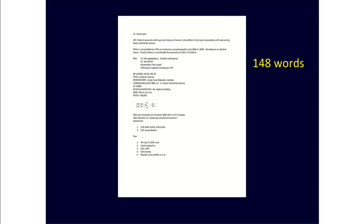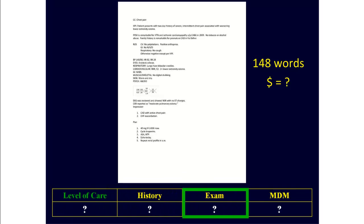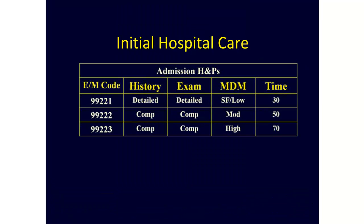This is an admission H&P. It contains 148 words. To figure out what it's worth, you need to figure out the level of care by taking apart the history, the exam, and the medical decision-making, and plugging that information into this table, which shows the documentation requirements for admission H&Ps.